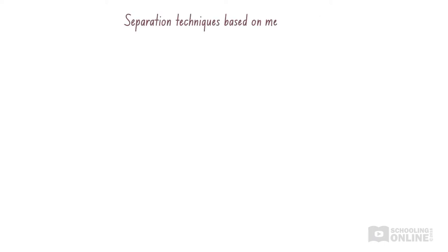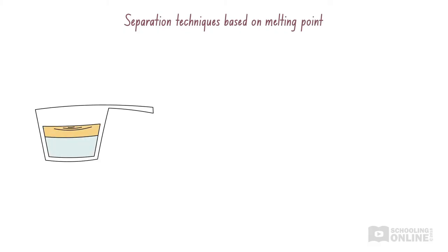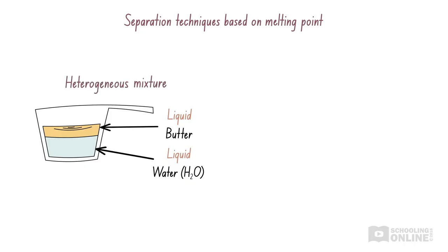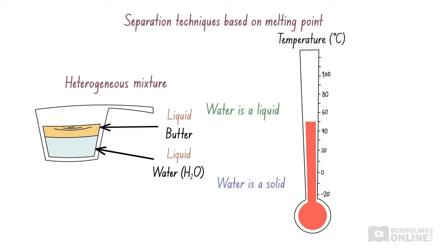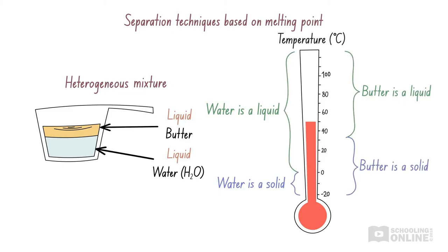In some mixtures, the major differences between two or more pure substances are their melting points, and we can use this to separate the components. For example, let's consider a pot of melted butter and water. They form a heterogeneous mixture since they do not combine evenly. The melting point of water is zero degrees Celsius, while the melting point of butter is 32 degrees Celsius. If we leave this mixture on the stove at 50 degrees Celsius, then both the butter and water will remain as liquids, since 50 degrees Celsius is above their melting points.